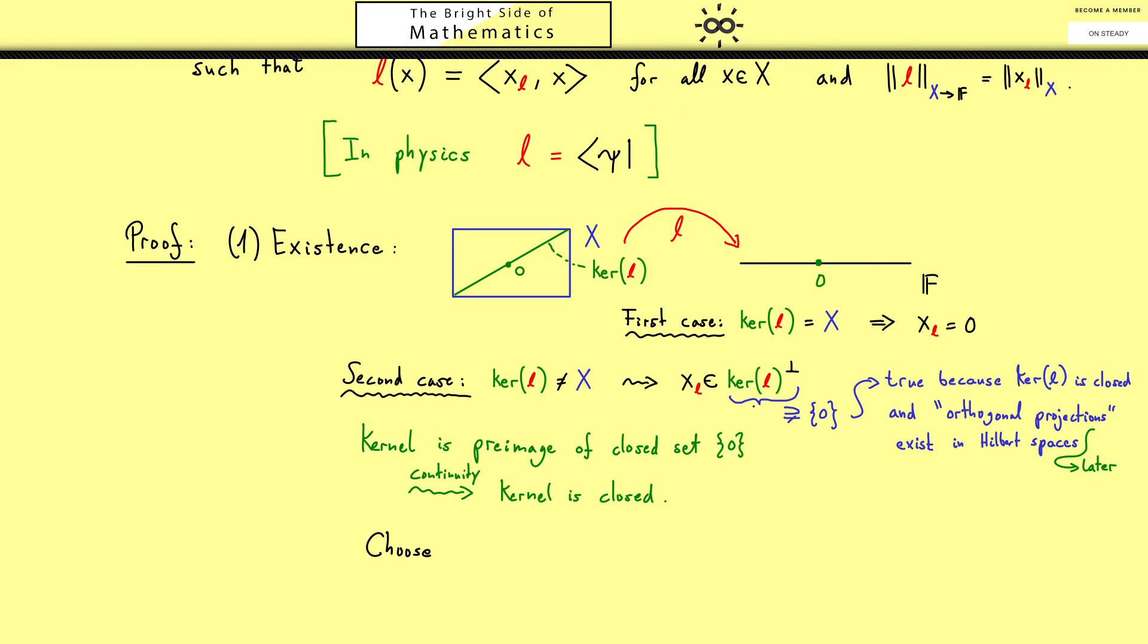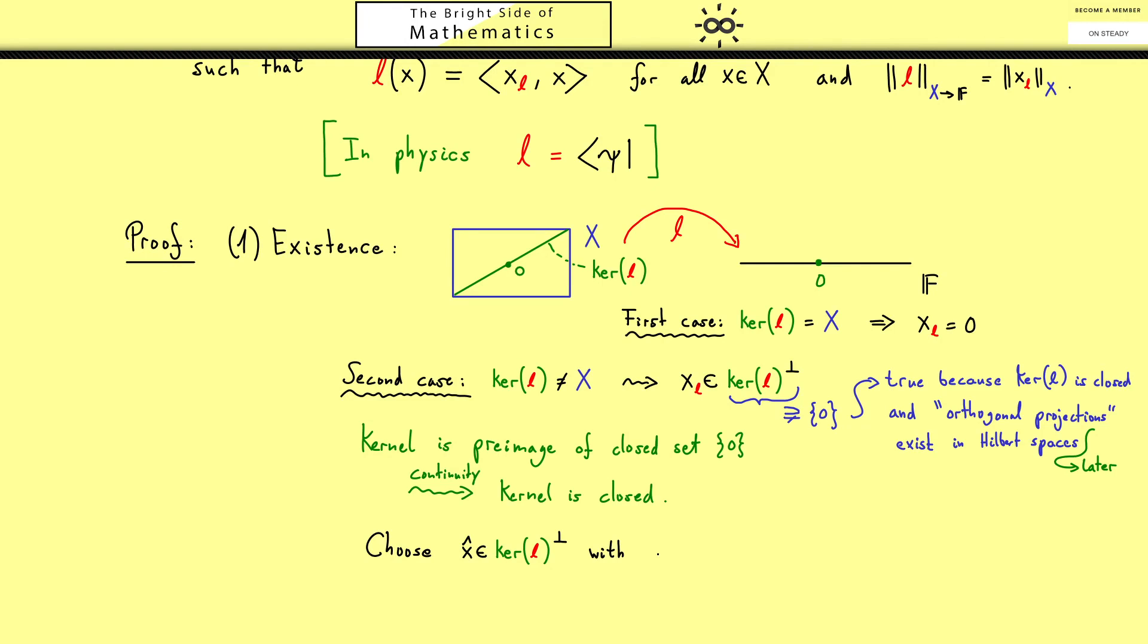For this let's choose any vector from the orthogonal complement which is not the 0 vector. So let's call it x hat and maybe we normalize it from the beginning. So the norm of x hat should be exactly 1. And then we just scale our vector to get our xL. So we set that as L of x hat times x hat where we use the complex conjugation here. It will turn out that this one is exactly the correct scaling factor. Now in the next step we will split up a general vector x into two components. One should lie in the kernel of L and the other one should go into the direction of x hat.